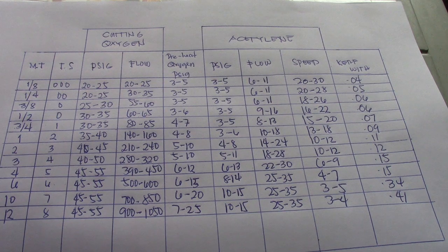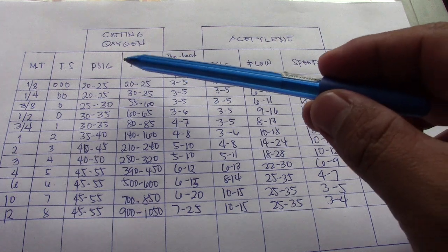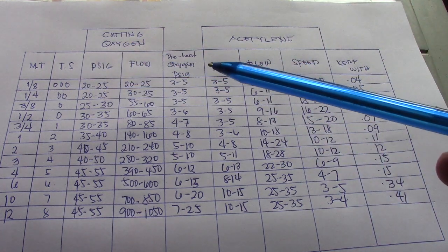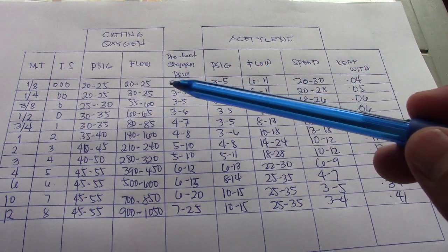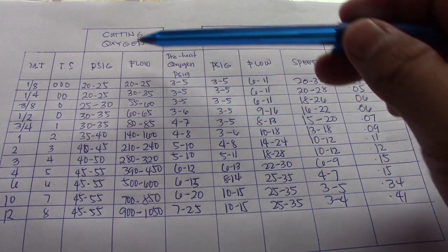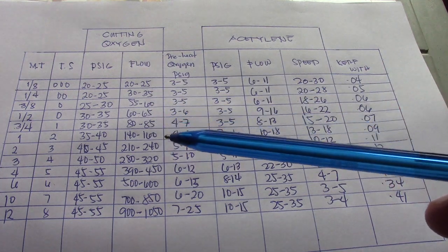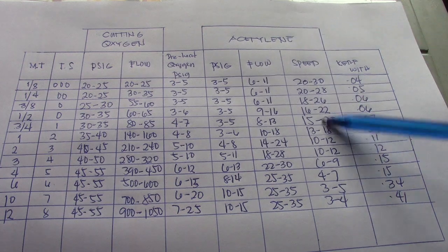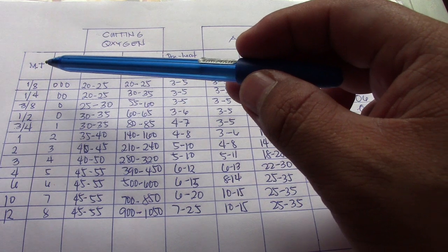In this table, we're showing the correct size of cutting torches — the correct size of pressure, the correct flow rate. This column is for the oxygen cutting oxygen, and this column is for the acetylene. MT means metal thickness.